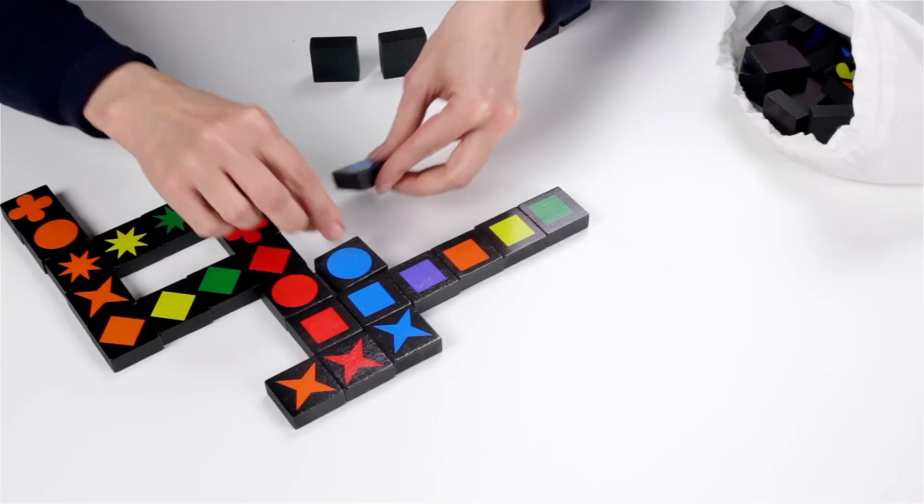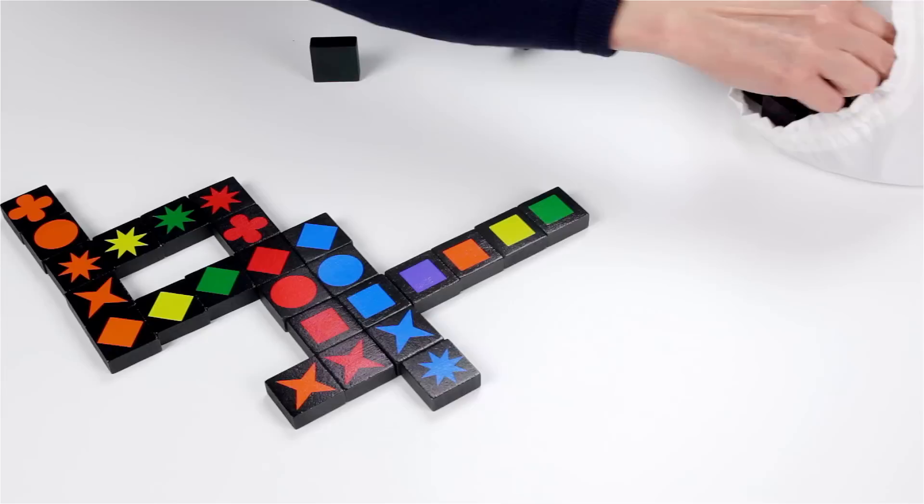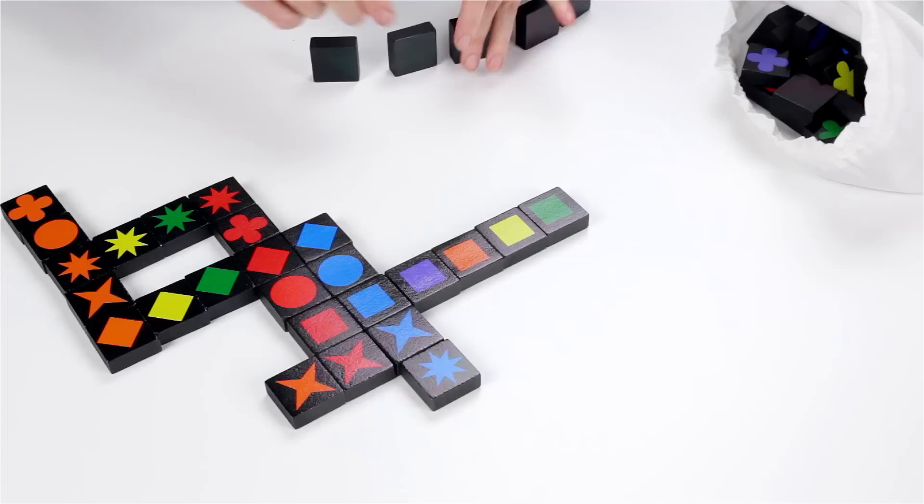Players score points for the number of pieces they can add to a line in one play. At the end of your turn, draw pieces from the bag to replace the played pieces.